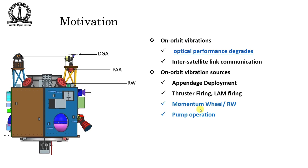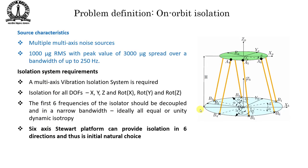One of the major sources of vibration is the momentum wheel and reaction wheels. These momentum and reaction wheels are used to maintain orientation without wasting energy correcting small errors — they act like a gyroscope to maintain the orientation of the spacecraft, camera, or other payload. The spacecraft also has pumps to circulate liquid for cooling, and all these cause vibration when in orbit.